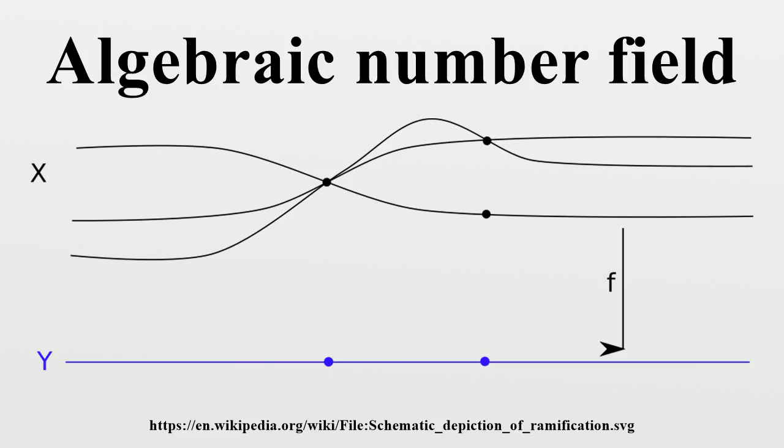Examples: The smallest and most basic number field is the field Q of rational numbers. Many properties of general number fields, such as unique factorization, are modeled after the properties of Q.